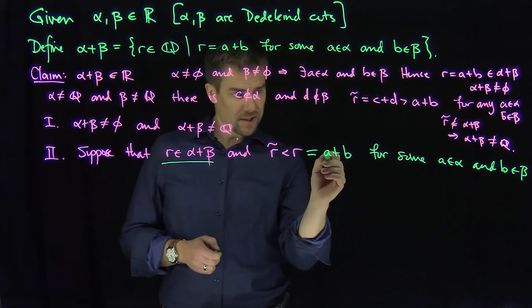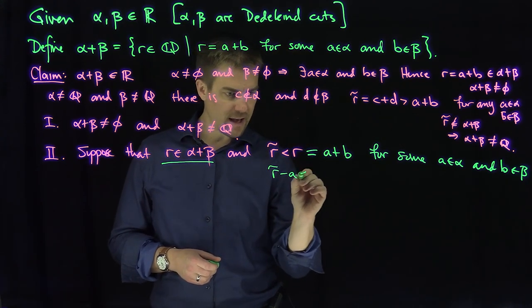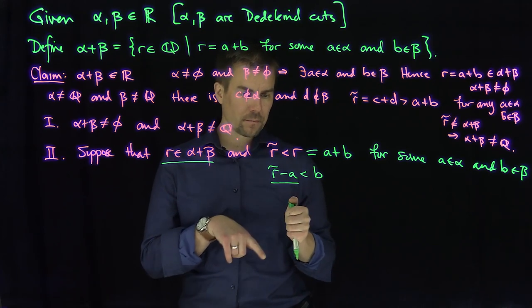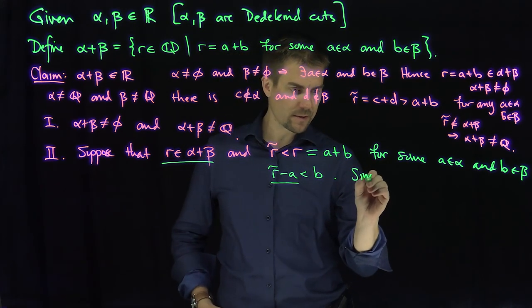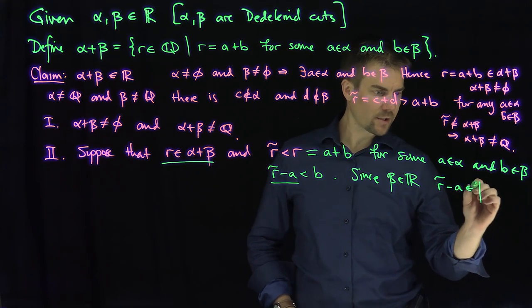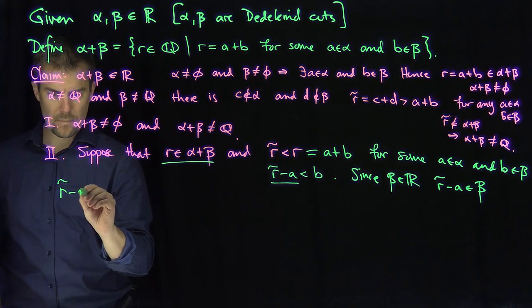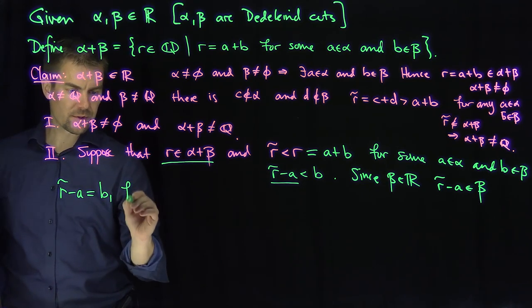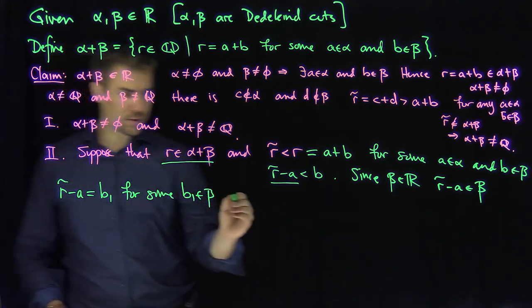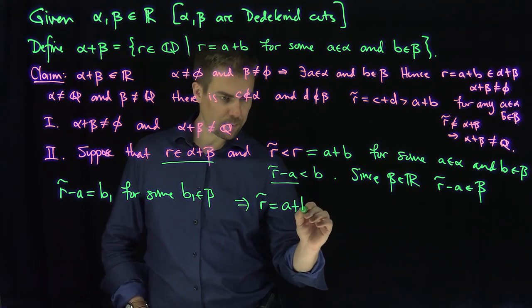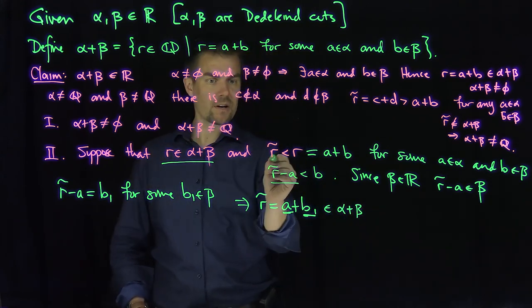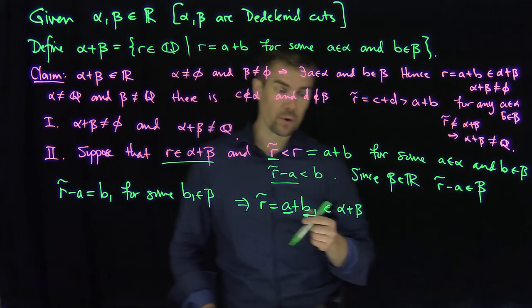That tells me r-tilde minus a is less than b. So r-tilde minus a is a rational number and this rational number is less than b. Since beta is a Dedekind cut, r-tilde minus a is also in beta. So r-tilde minus a equals b1 for some b1 in beta. That tells me r-tilde equals a plus b1, and now a is in alpha and b1 is in beta, so this is in alpha plus beta. That shows every rational number r-tilde that's less than r is also in alpha plus beta. That is condition two of a Dedekind cut.